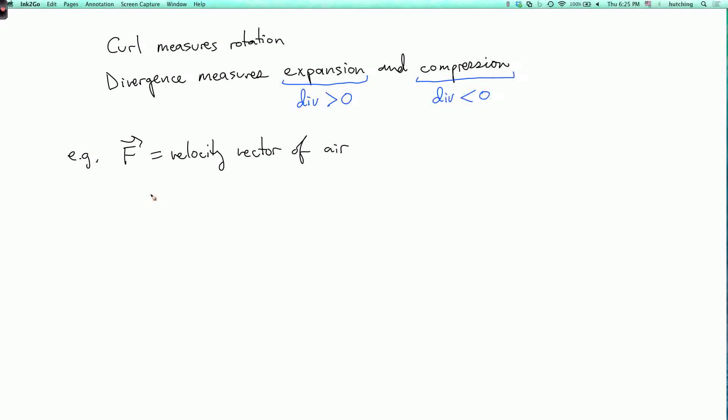Now, if it's getting compressed somewhere, so divergence is negative, or actually divergence is negative where the pressure is increasing. So if you have some air here that looks like this, then air is being pushed into this smaller area and the pressure is going up.